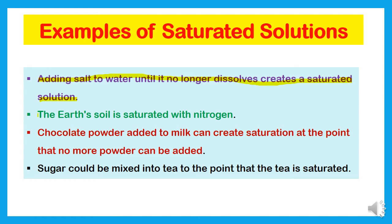Number two: the earth soil is saturated with nitrogen. At one point, the soil reaches a saturation point. Number three: chocolate powder added to milk can create a saturated solution at the point that no more powder can be dissolved. If you add chocolate powder to milk, there will be a point where it will not dissolve further.